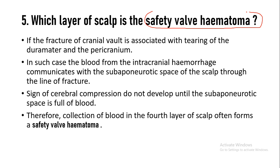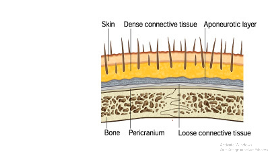The next question is: which layer of the scalp is the safety valve hematoma? If the fracture of the cranial vault is associated with tearing of the dura mater and pericranium, you will have the safety valve hematoma. Looking at the five layers of the scalp, deep to the bone is the pericranium, and deep to the pericranium is the dura mater. In this condition, the inner endosteal layer or pericranium is ruptured and there is a fracture in the bone.